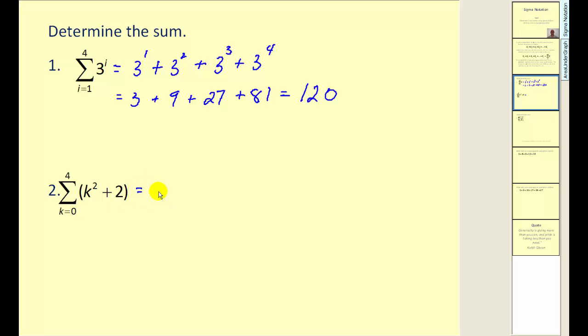So the first value of k here would be zero. We have 0 squared plus 2, plus. And the k value is going to take on the value of one, two, three, four, and then stop.